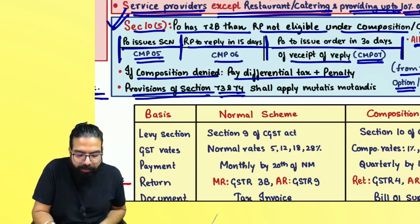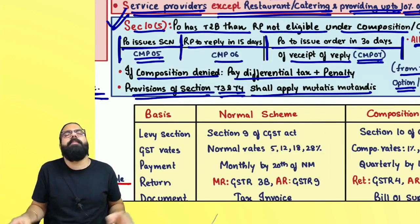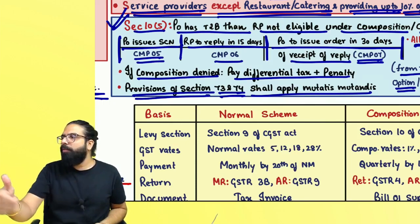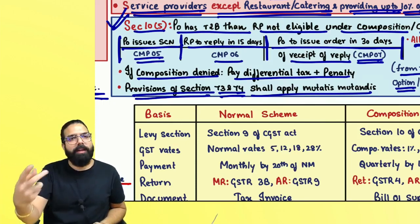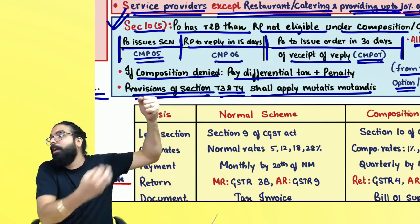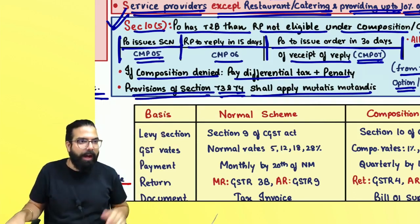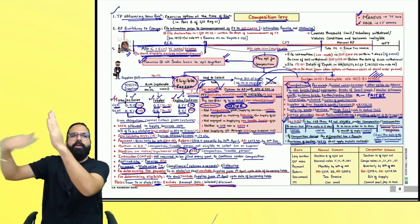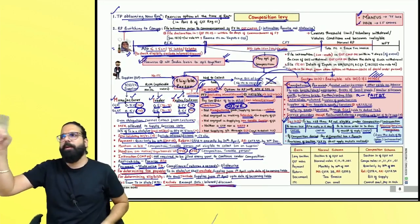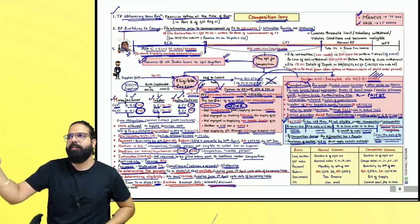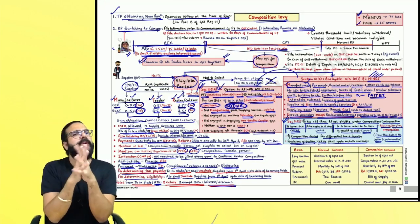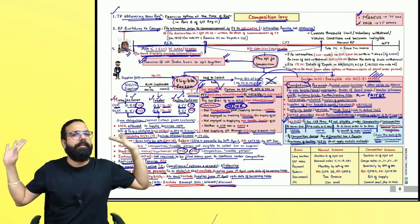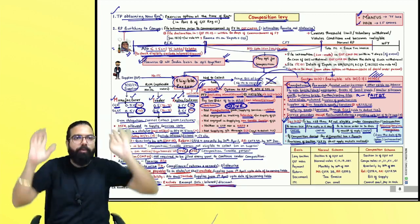If he denies composition — for example, as a manufacturer you were paying only 1% but on your goods 18% is applicable — then the differential 17% will be recovered. If composition is denied, you have to pay the differential tax with penalty. The provisions of Section 73 and 74 shall apply mutatis mutandis for that 17% recovery. If you don't pay the demand order within three months, recovery proceedings can be initiated.